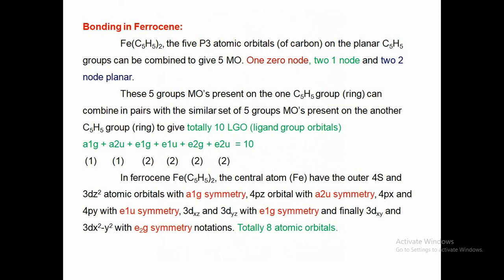Bonding in ferrocene involves both ligand and metal orbitals. The five pz atomic orbitals of carbon on the planar C5H5 ring combine to give five molecular orbitals: one zero-node, two single-node, and two double-node. These five group molecular orbitals on one C5H5 group combine in pairs with a similar set from the other C5H5 group, giving a total of 10 ligand group orbitals: a1g, a2u, e1g, e1u, e2g, and e2u.